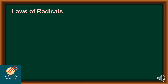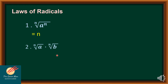There are four laws of radicals that we will discuss in this tutorial. The first law is the n-th root of a raised to n. Since the index and exponent are the same, I can factor it out, so this equals a. The second law is the n-th root of a times the n-th root of b. Since we have the same index n, I can simply write this as the n-th root of the product a times b.